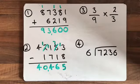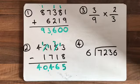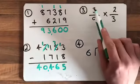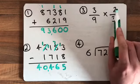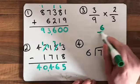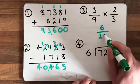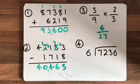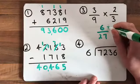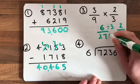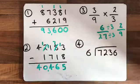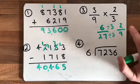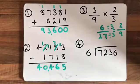Moving on to number three, the multiplication of fractions. Remembering the quick compact method: multiply the numerators together — three multiplied by two is six — and multiply the denominators — nine multiplied by three is twenty-seven. We look at whether it can be simplified. Is there a number that goes into six and into twenty-seven? Yes, it's three. So we simplify by dividing both by three: six divided by three is two, twenty-seven divided by three is nine. So the answer in its simplest form is two ninths. Remembering that six over twenty-seven is still equal to two ninths.